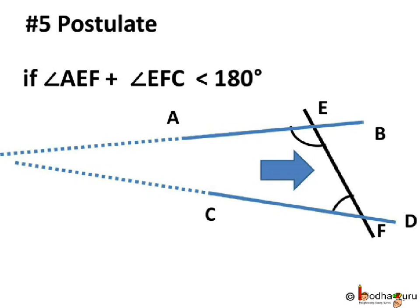Here if you see angle AEF and angle EFC are interior angles. On the left side of the intersecting line, angle AEF plus angle EFC is less than 180 degrees. So AB and CD would eventually meet if we extend them on this side, that is on the left hand side.